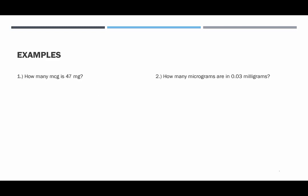Let's look at some examples. First, how many micrograms is equivalent to 47 milligrams? To convert from milligrams into micrograms, we would take 47 and multiply it by 1,000.